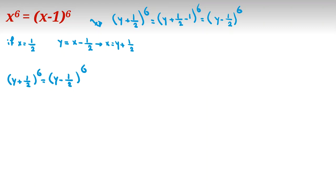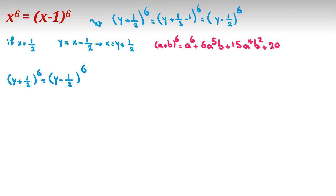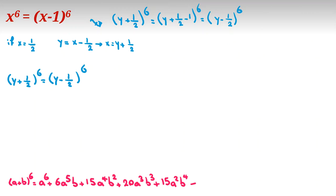Before expanding, you should know the binomial theorem. For a plus b to the power of 6, it expands as: a⁶ plus 6a⁵b plus 15a⁴b² plus 20a³b³ plus 15a²b⁴ plus 6ab⁵ plus b⁶.